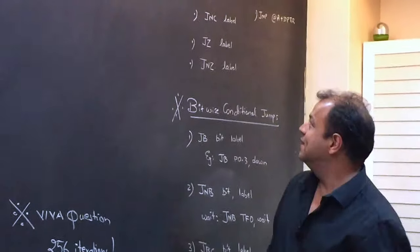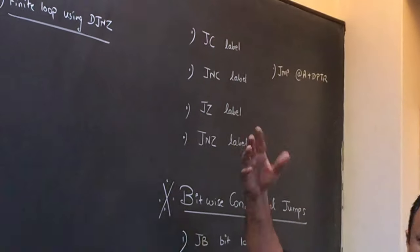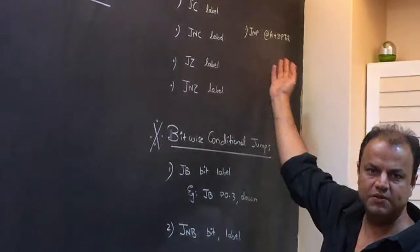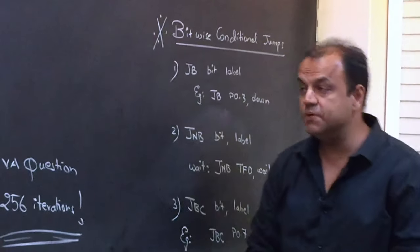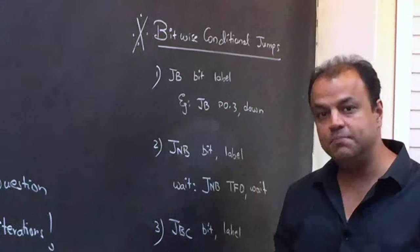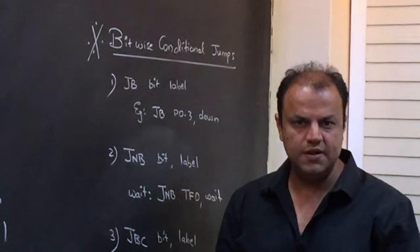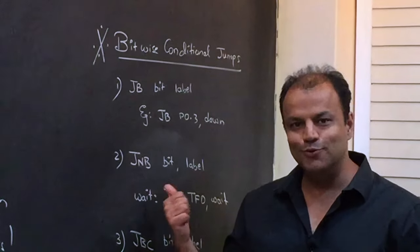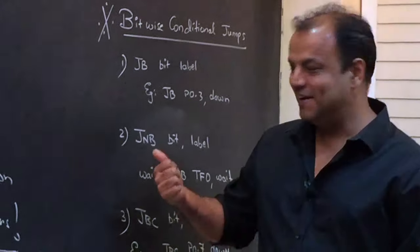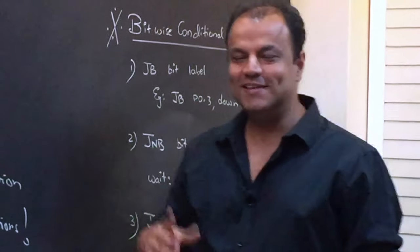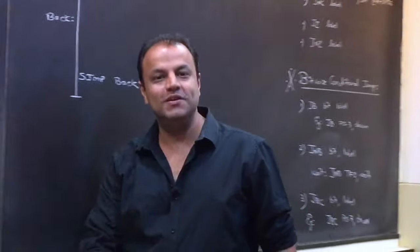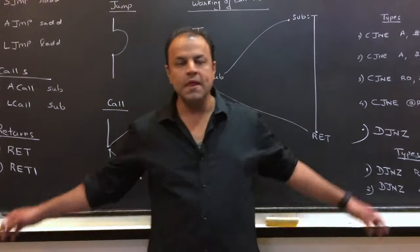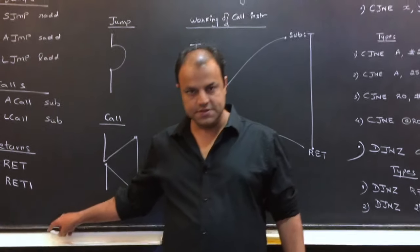Then there are more conditional jumps: jump if carry, jump if no carry, jump if zero, jump if no zero, indirect jump using A plus DPTR, and then bitwise jump instructions - JB, JNB and JBC. JNB, if you've seen theory topics of 8051, if you've seen programs related to timers, related to serial ports, you know how important this instruction is. It's there in every serious program of 8051. It's the one that's used to check whether the timer has overflown or not, or whether your serial data has been completed, whether your delay is over.